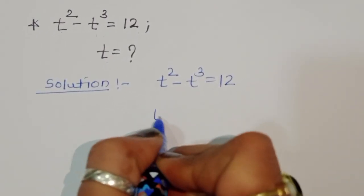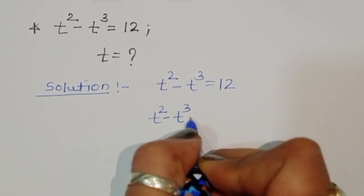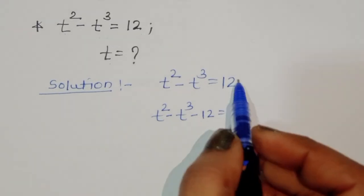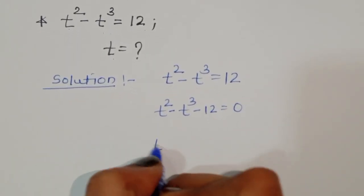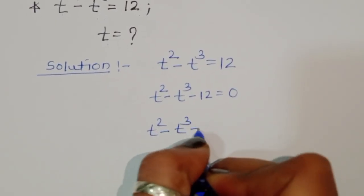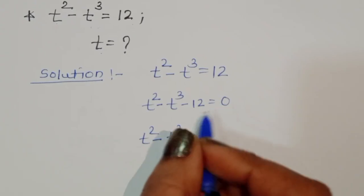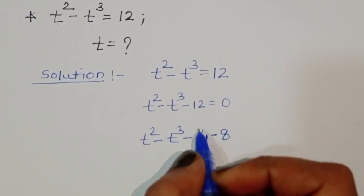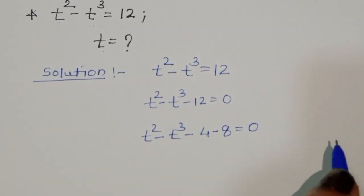We can rewrite this as t squared minus t cubed minus 12 is equal to 0. Now, this 12 we can write as 4 minus 4 minus 8, since minus 4 minus 8 is minus 12, so this is equal to 0.